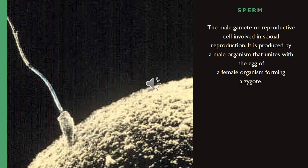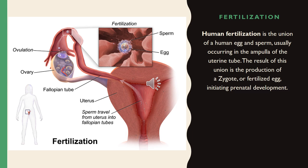The male gamete is the reproductive cell involved in sexual reproduction. It is produced by a male organism and unites with the egg of a female organism, forming a zygote. Human fertilization is the union of a human egg and sperm, usually occurring in the ampulla of the uterine tube, resulting in the production of a zygote and initiating prenatal development.